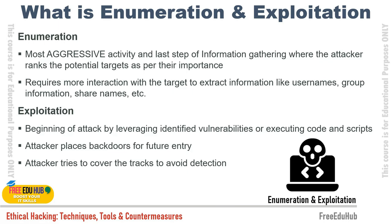Enumeration requires more interaction with the target to extract information like usernames, group information, share names, etc. Certain tools are used to find details of remote machines including usernames and groups. Exploitation is the beginning of the attack by leveraging identified vulnerabilities or executing code and scripts. Once vulnerabilities are identified, attackers use codes or scripts to exploit them.